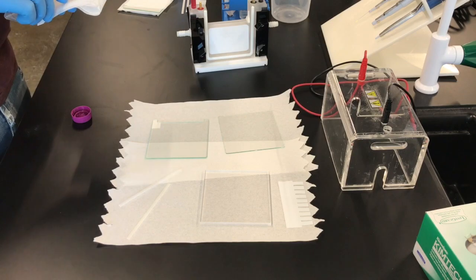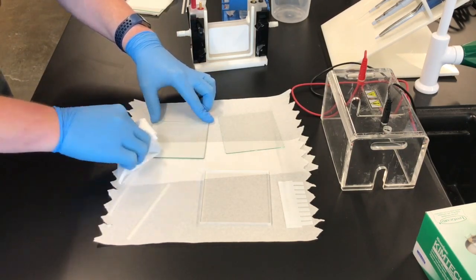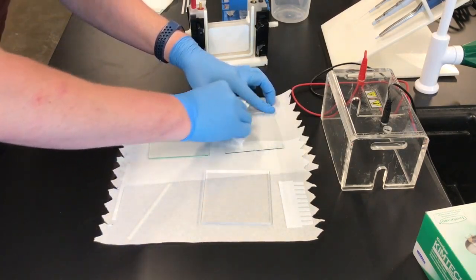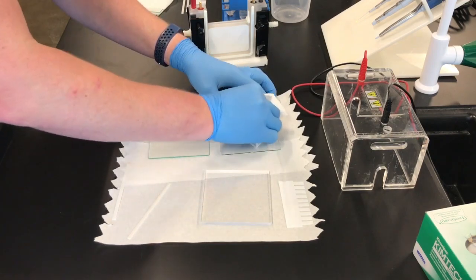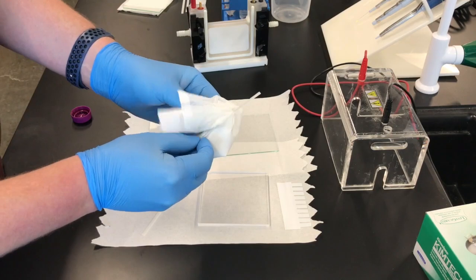We're going to use a little bit of ethanol to clean off the glass plates. This is just to get rid of any dust or residue that might be on the plates. Clean one side of each of them, and you can also use the chem wipe to wipe down the spacers and the comb as well.